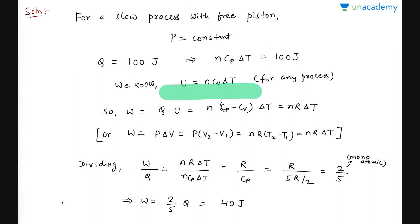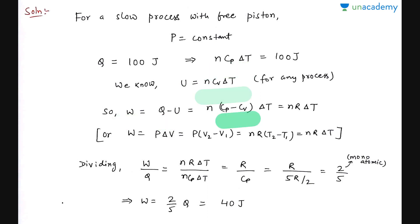So ΔU = nCvΔT. By the first law, work done W = Q − ΔU. So W = nCpΔT − nCvΔT = n(Cp − Cv)ΔT = nRΔT, since Cp − Cv = R.